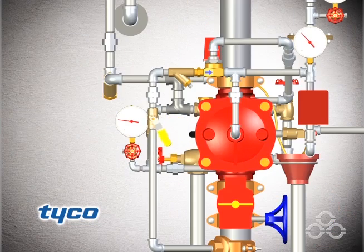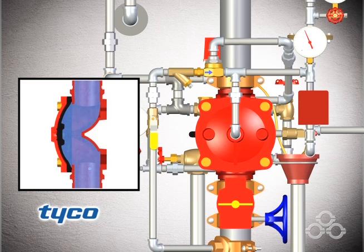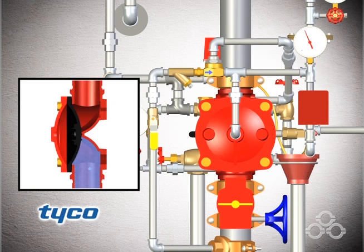Open the diaphragm chamber supply control valve to apply full pressure to the diaphragm chamber, forcing the diaphragm to close the DV-5 waterway.